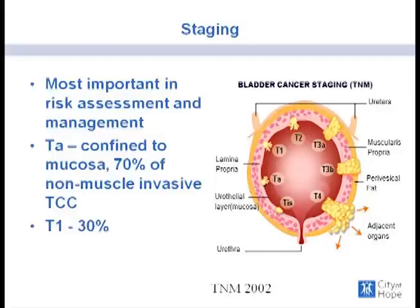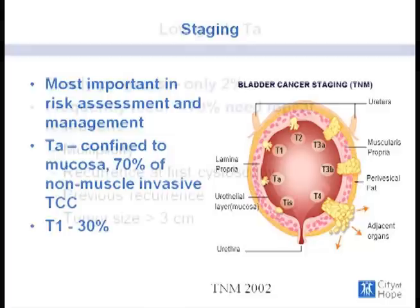TA lesions are those confined to the mucosa and account for 70% of the cases we see in non-muscle invasive bladder cancer. T1, alternatively, is disease that's gone into the lamina propria and accounts for about one-third of the patients that present.